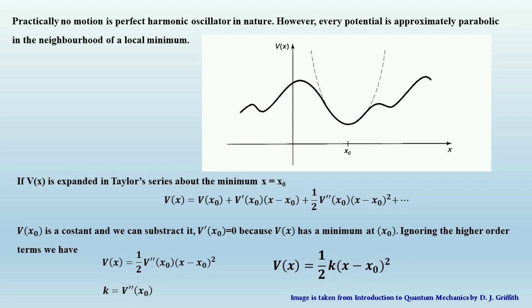We can consider a classical harmonic oscillator as a mass m attached to a spring of spring constant k. The motion is governed by Hooke's law due to the elastic property, and we can express the potential as V(x) equals ½kx², with the force f equals minus kx. However, in practice there is no such thing as a perfect harmonic oscillator. If we stretch the spring too far, at a certain point the spring will break and Hooke's law completely fails.